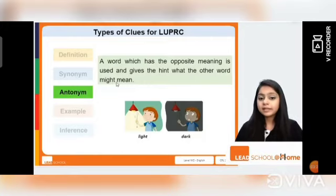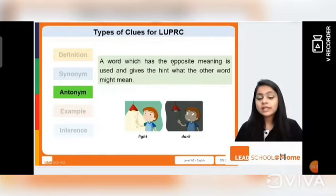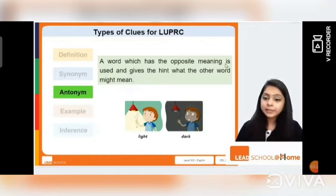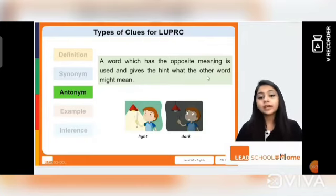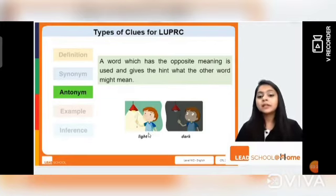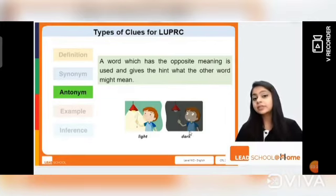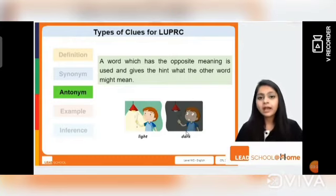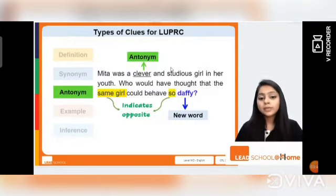The next clue type is an antonym, where a word with the opposite meaning is used and gives a hint about what the other word might mean. For example, 'dark' and 'light' are exactly opposite in meaning and are examples of antonyms.